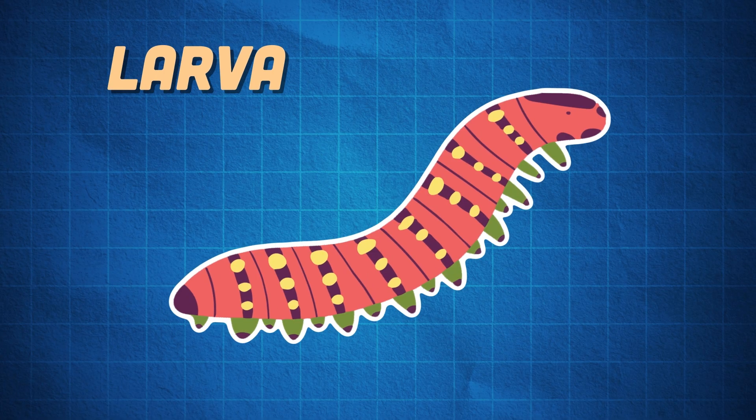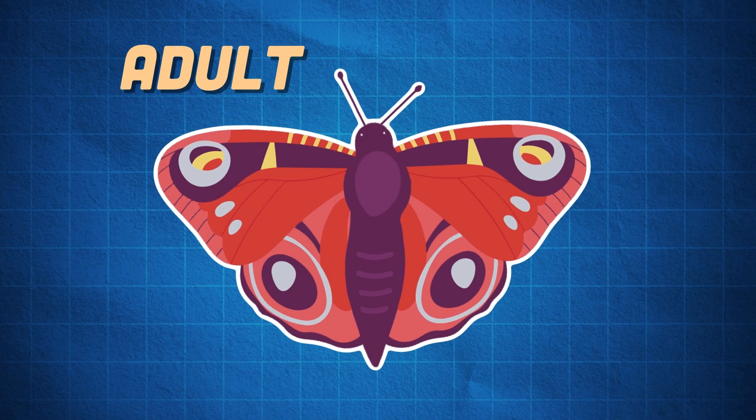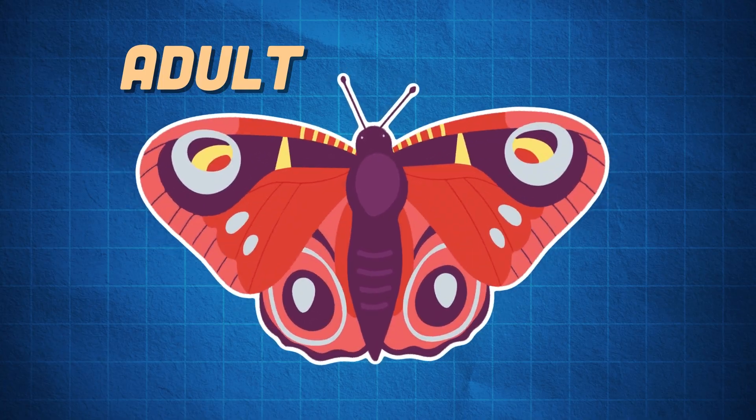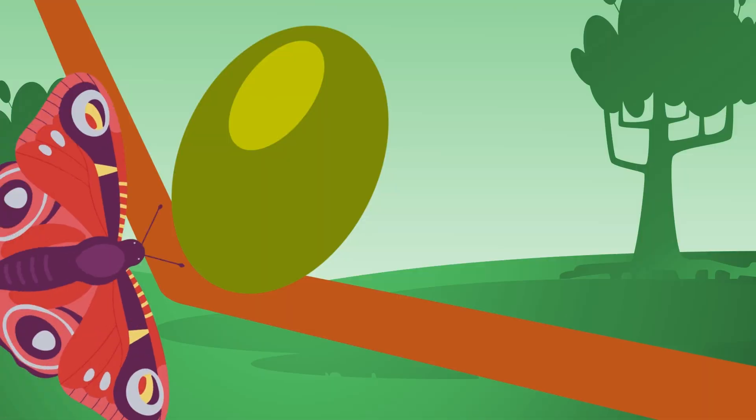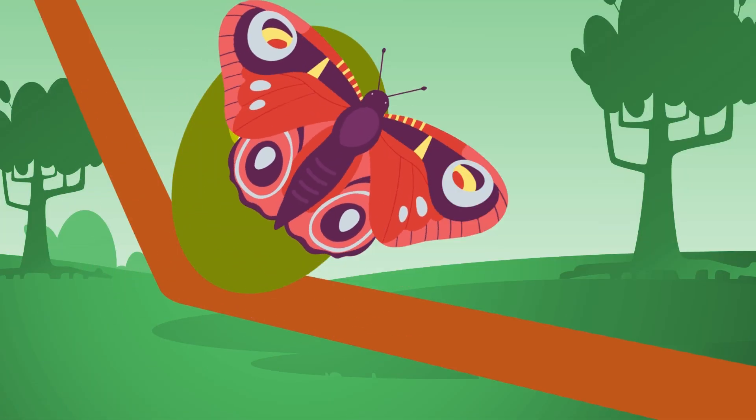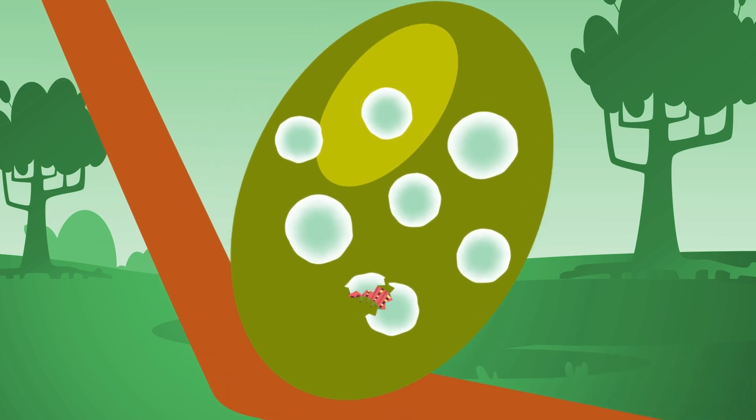These four stages are the egg, the larva, the pupa, and then the adult, which is the final stage for this process. The egg stage begins when an adult butterfly lays an egg on a plant, which is future food for the caterpillar.